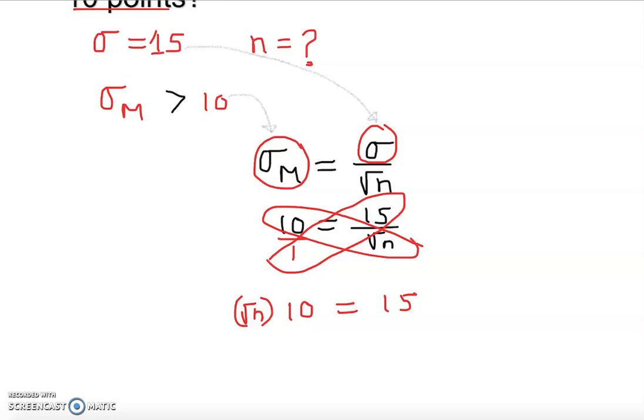So then we are isolating, so we divide by 10 on both sides. So square root of n is equal to 1.5.